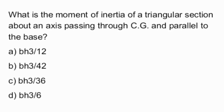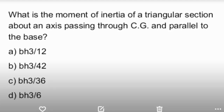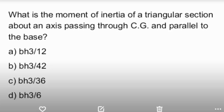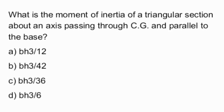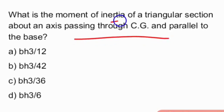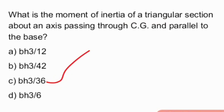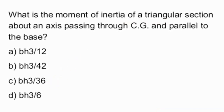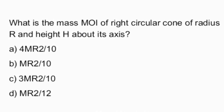What is the moment of inertia of a rectangular section about an axis passing through CG and parallel to the base? The answer is bh³/36 — option C is the right answer.